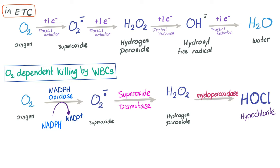Now let's talk about oxygen free radicals. Free radicals are bad for your body because they can damage red blood cells, but they can be good if they damage bacteria. Here we have oxygen. When we reduce oxygen by adding an electron — since an electron has a negative charge, it causes reduction — oxygen is converted into superoxide. Negative means reduction. Can we add another electron? Another partial reduction? Yes — now we have hydrogen peroxide.